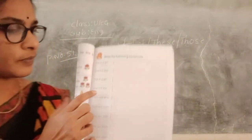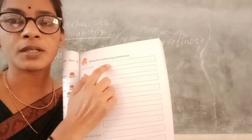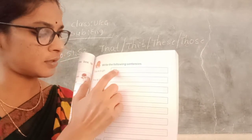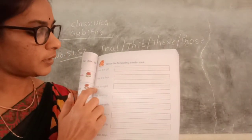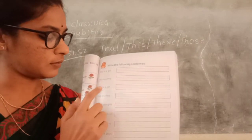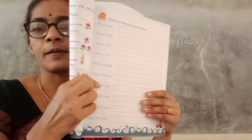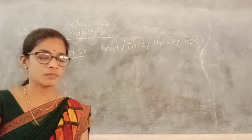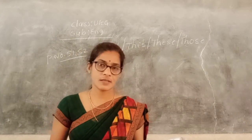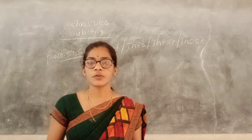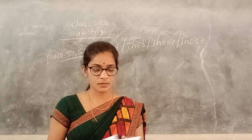Write the same sentences: This is a girl. This is a boy. That is a girl. That is a boy. Complete this and take one photocopy, then send it to me. Exams are coming soon children, you prepare for all exams. Today's class is completed. Next class I will tell you the next chapter. Thank you.